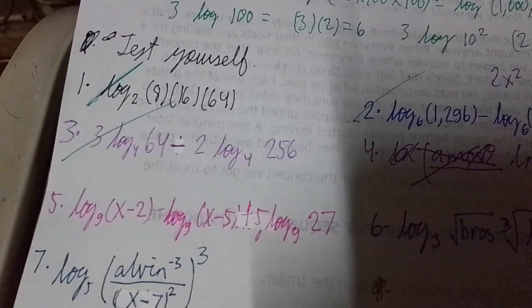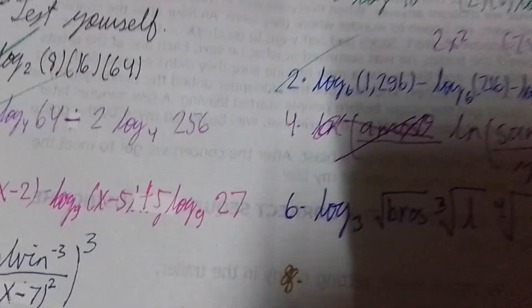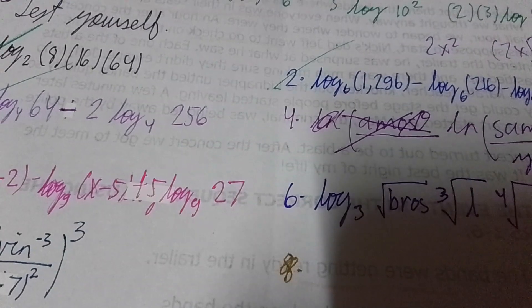First, let's rewrite in simplified form. We see a minus sign, so we apply the quotient law. We write log base 9 of the quantity x minus 2 upstairs, and x minus 5 in the denominator. Then plus 5 times log base 9 of 27 — applying the power law, 27 is raised to the fifth power.